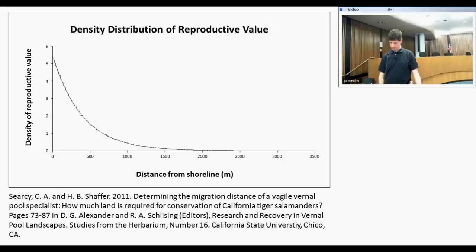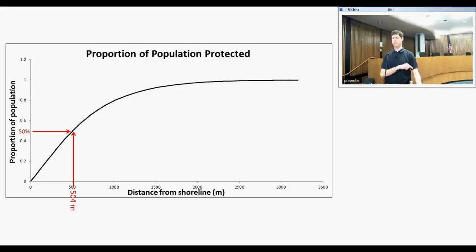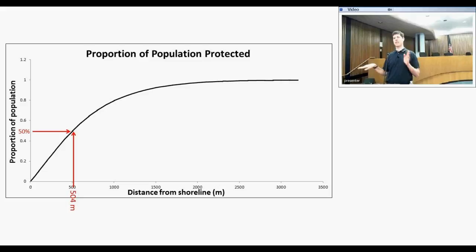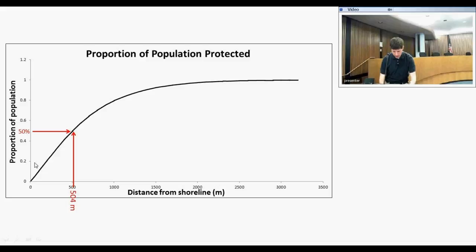By integrating underneath this function — accounting for the fact that this isn't happening in a single dimension, but in all directions from the pond — we can calculate how far out from the pond edge a set percentage of the salamander population is found. For example, to get 50% of the salamanders, you have to go out 504 meters. California tiger salamanders are migrating almost twice as far as any other species in their genus that has been studied. All other studies of ambystomatid salamanders looking at migration distance have occurred on the east coast in woodland species — very different from the dry grasslands the California tiger salamander occupies.